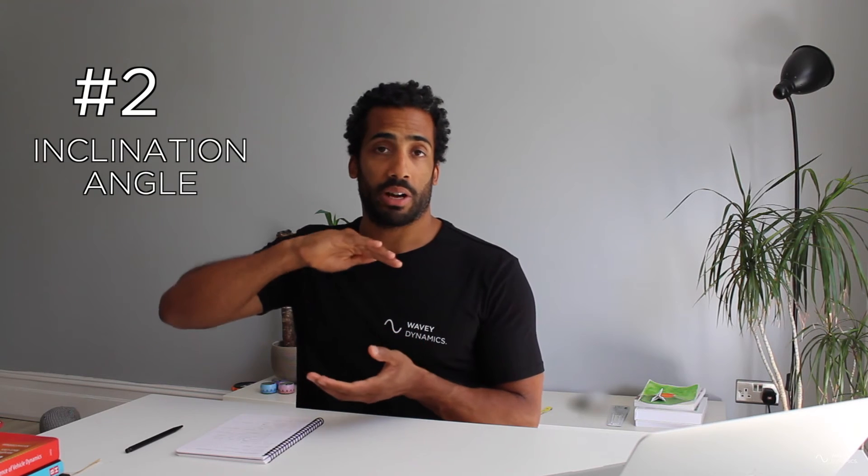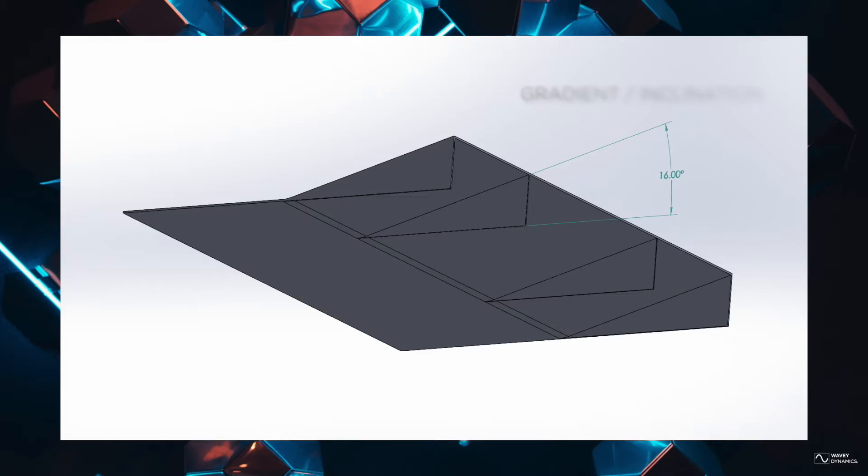The other important factor in diffuser design is the inclination angle — how steep is the gradient from the flat underbody into the divergent section. The steeper it is, the more separation you get. There's obviously a balance between having it steep enough that extraction is maximised, and overstepping that to the point where extraction starts to fall off. So getting that right is important.